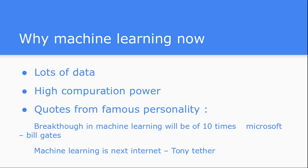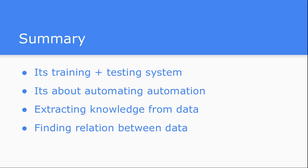Let's summarize what a machine learning system is in general. We have seen it is a training and testing system. In the current system, we write a program and feed data to get output. But machine learning is a two-step process: first, you give the data and the machine trains itself — it learns from that data and comes up with a model. The second phase is testing, or the inference system — when you give a new input, it detects based on that model. So it's a combination of training plus testing.